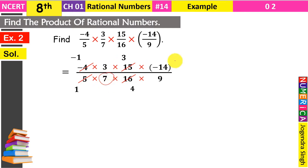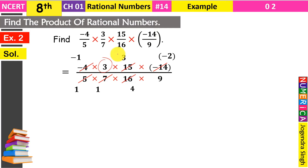अब denominator का 7 और numerator का minus 14 choose कर रहे हैं। 7 को 7 से cut किया → 1 मिला। Minus 14 को 7 से divide किया → minus 2 मिला। (7 × 2 = 14)